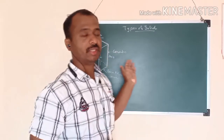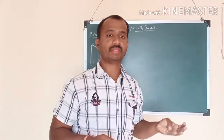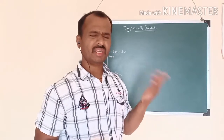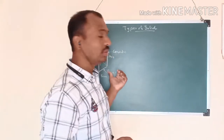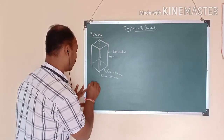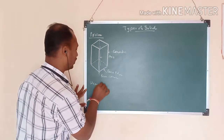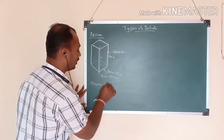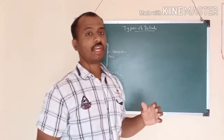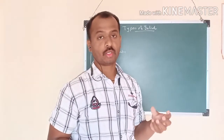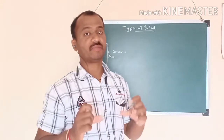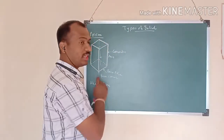There are different types: hexagonal prism, pentagonal prism, square prism, triangular prism, and many more. One more is called a hexahedron — hexahedron means a cube, which has all six faces as squares. That is called a hexahedron.